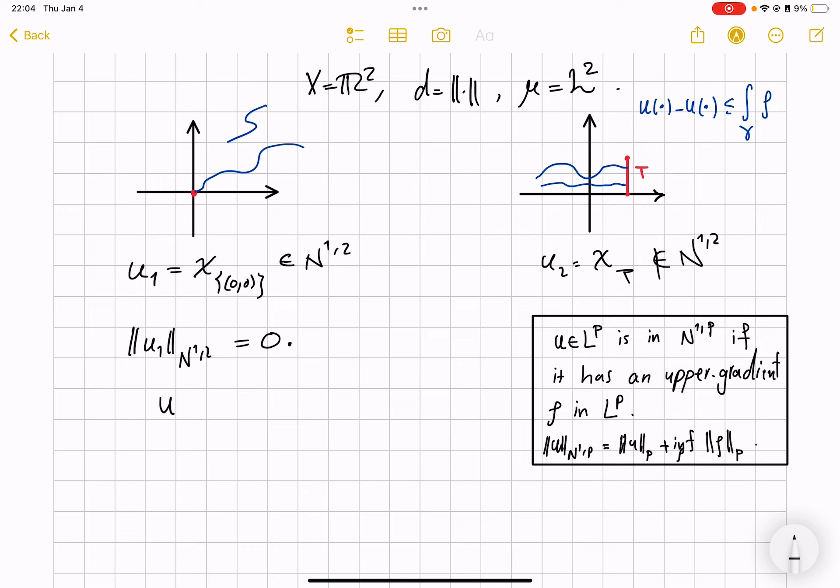So in this case u1 necessarily must be cautioned out to be equivalent to the 0 function so that the space N^{1,2} does become a normed space.